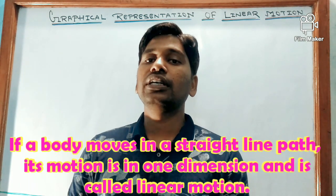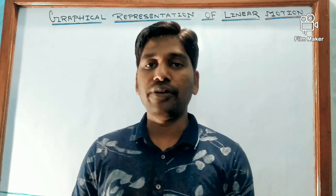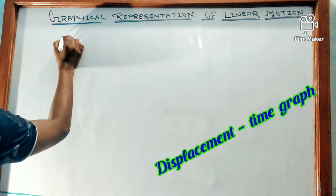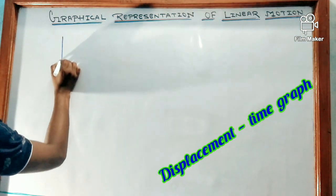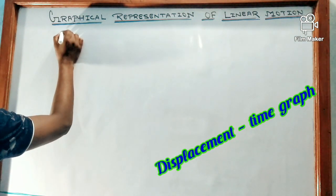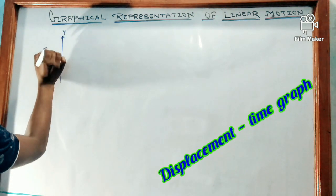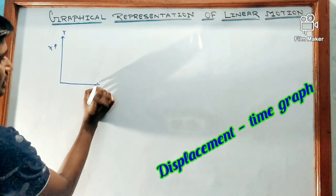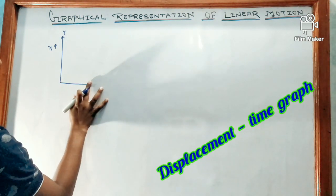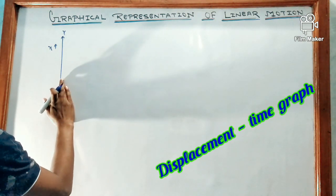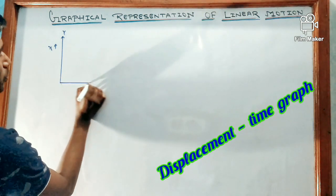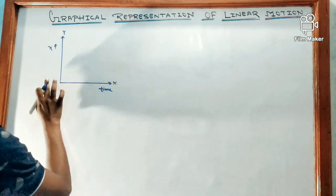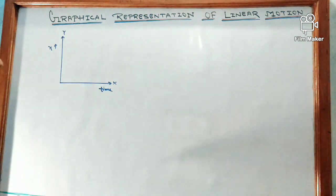First we will start with the displacement-time graph. For this we will draw two perpendicular lines: the y-axis along which we will represent displacement, and the x-axis along which we will represent time. So this axis represents time and the y-axis represents displacement.